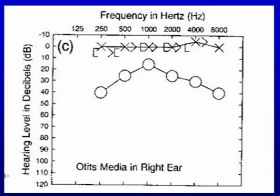Yeh audiogram jo is waqt aapke saamne hai, yeh bilateral moderate to profound mixed hearing loss ko represent kar raha hai. Circles right ear ko designate karte hain, crosses left ear ki designation hain. Upar masking ki symbols hain, aur yeh aapko bata raha hai ke yeh bilateral moderate to profound mixed hearing loss hai.